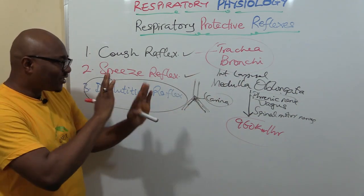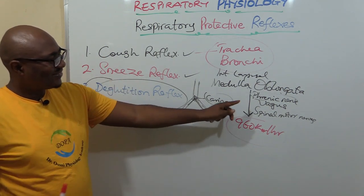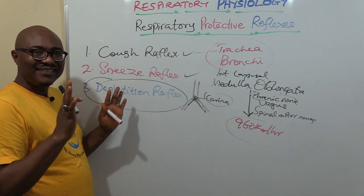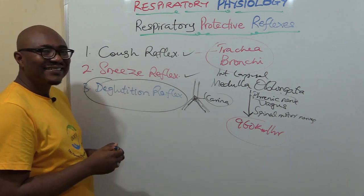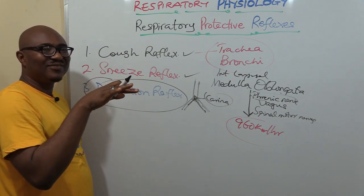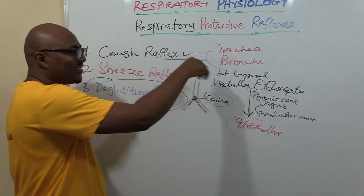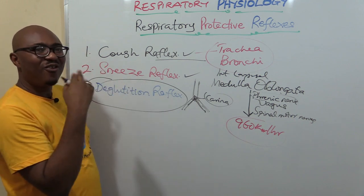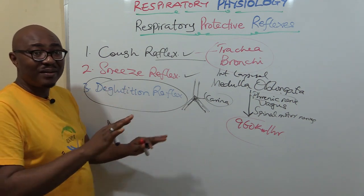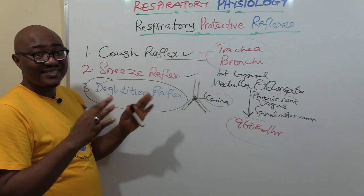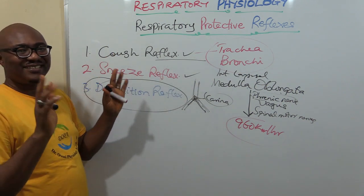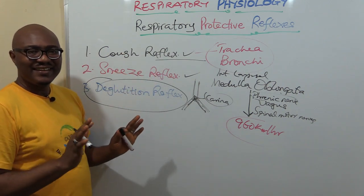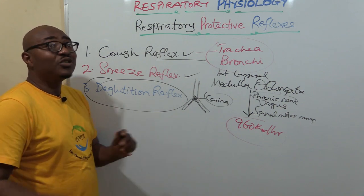The key difference between the two reflexes is that the sneeze reflex protects the upper respiratory tract, while the cough reflex protects the lower respiratory tract (bronchi and lungs). Both protect the respiratory system from irritant, foreign, harmful, toxic, and obnoxious substances. The deglutition reflex is also a protective reflex and is covered in the digestive system videos. That's what you need to know about respiratory protective reflexes — see you in the next video.